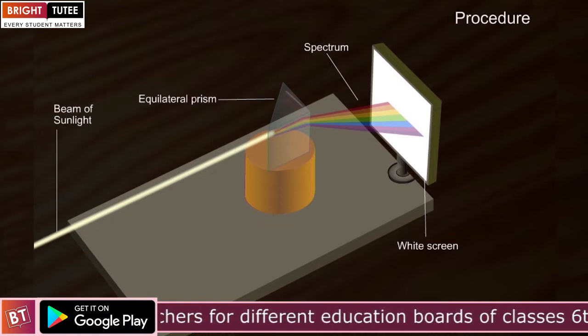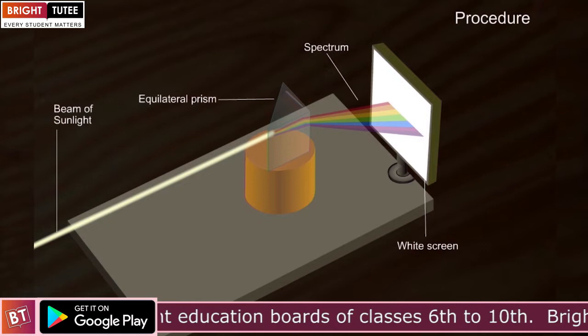It was found that light received on the white screen was a band of seven colors. That is our spectrum.